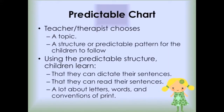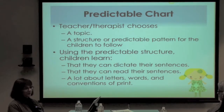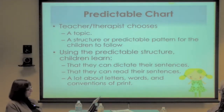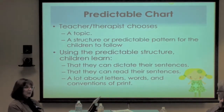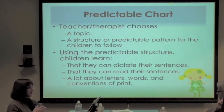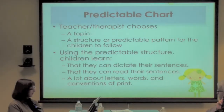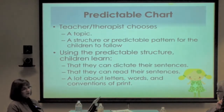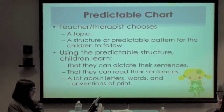Generally the therapist or teacher chooses the topic. We had some that were more book-related and some more related to the core words themselves. For example, if it was a book that the kids were very engaged with, the teacher may choose to have the predictable chart around that. If they needed more practice with the core words, she would make it more focused on that. The kids learn that they can do their part in dictating the sentences. A lot of times we use shared classroom communication devices to read back those sentences so they could hear what they said spoken aloud. They're getting a lot of information about letters, words, and conventions of print.